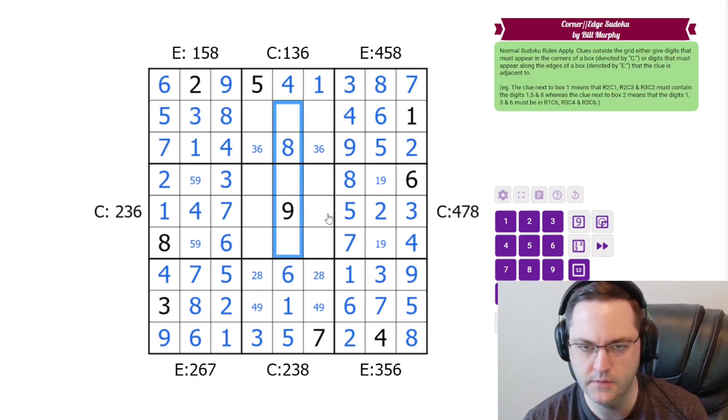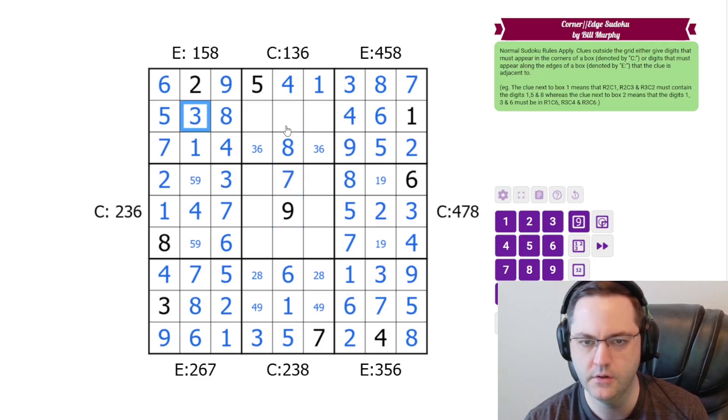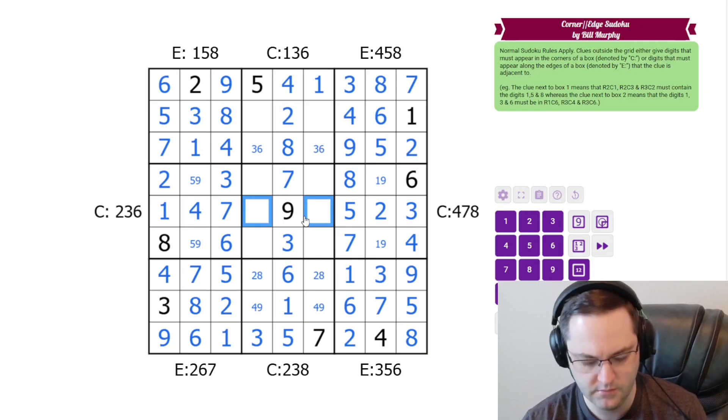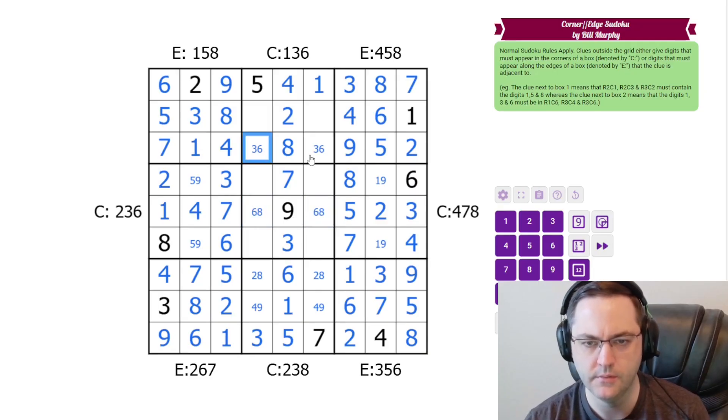This column needs 2, 3, 7. 2 and 3 here give the 7. And then the 3 here gives a 2. These are 6 and 8. Not resolved yet. So we've got our 6s. We've got our 8s.